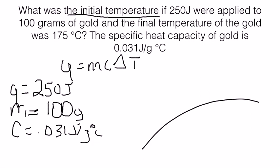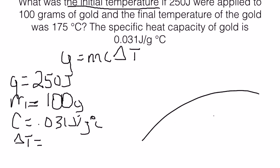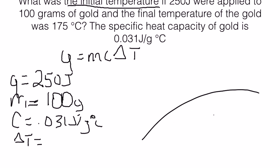And C is provided to us as 0.031 joules per gram degrees Celsius. And then we have delta T, which as you recall is temperature final minus temperature initial. And in this problem, we're solving for the initial temperature, so our temperature final is going to be 175 minus X, since that's what we're solving for.